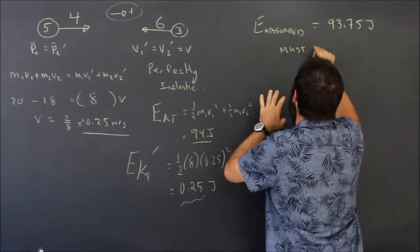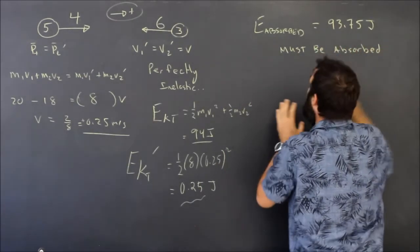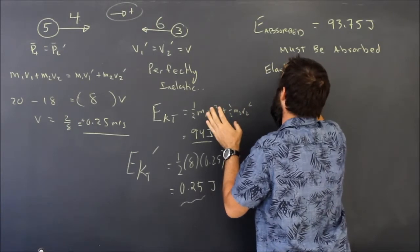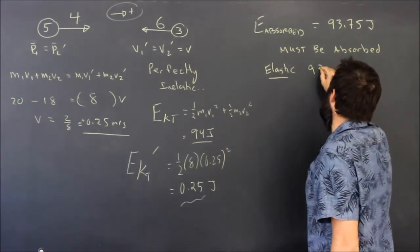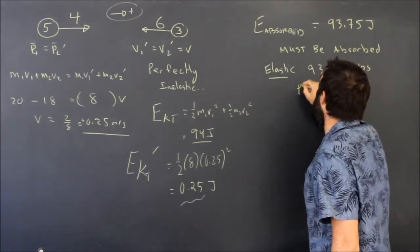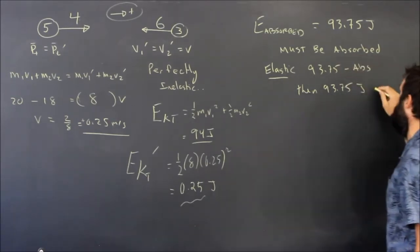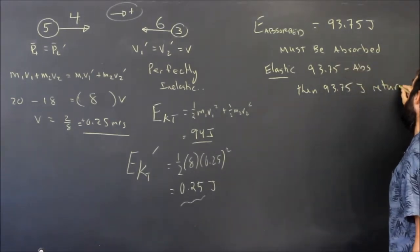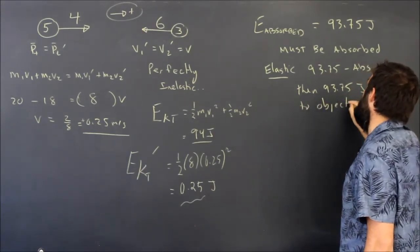I'm going to write, it must be absorbed, no matter what type of collision. What if it had been elastic from video A, which you've already watched? If it had been elastic, then 93.7 would have been absorbed, and then 93.75 joules of energy would have been returned to the objects as kinetic energy.